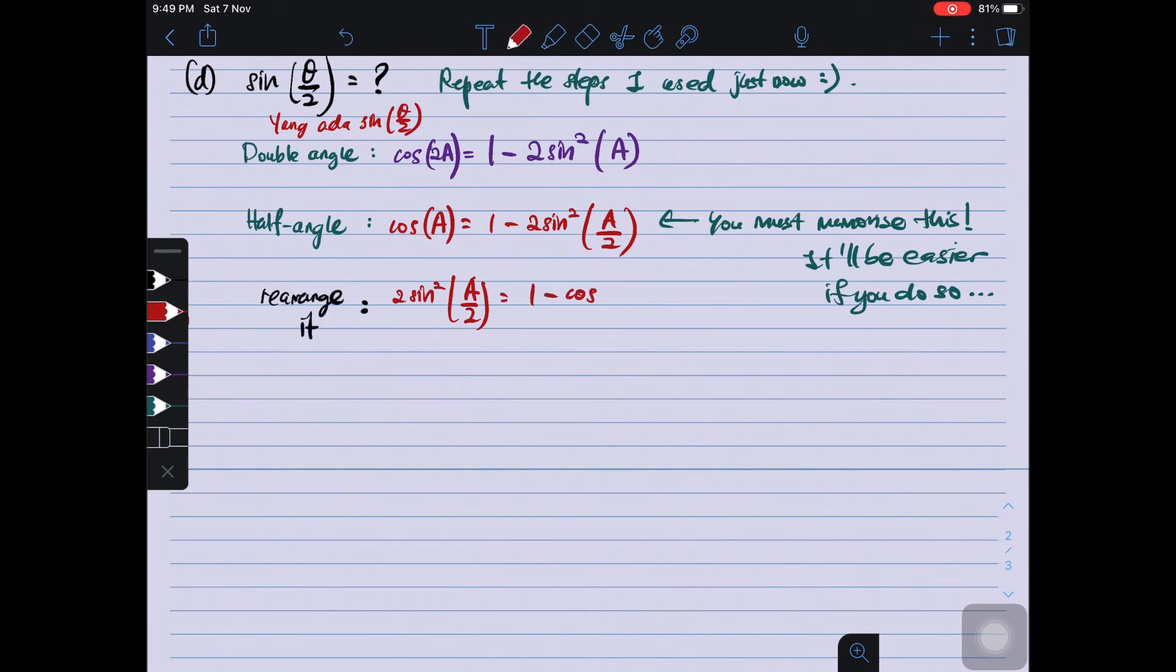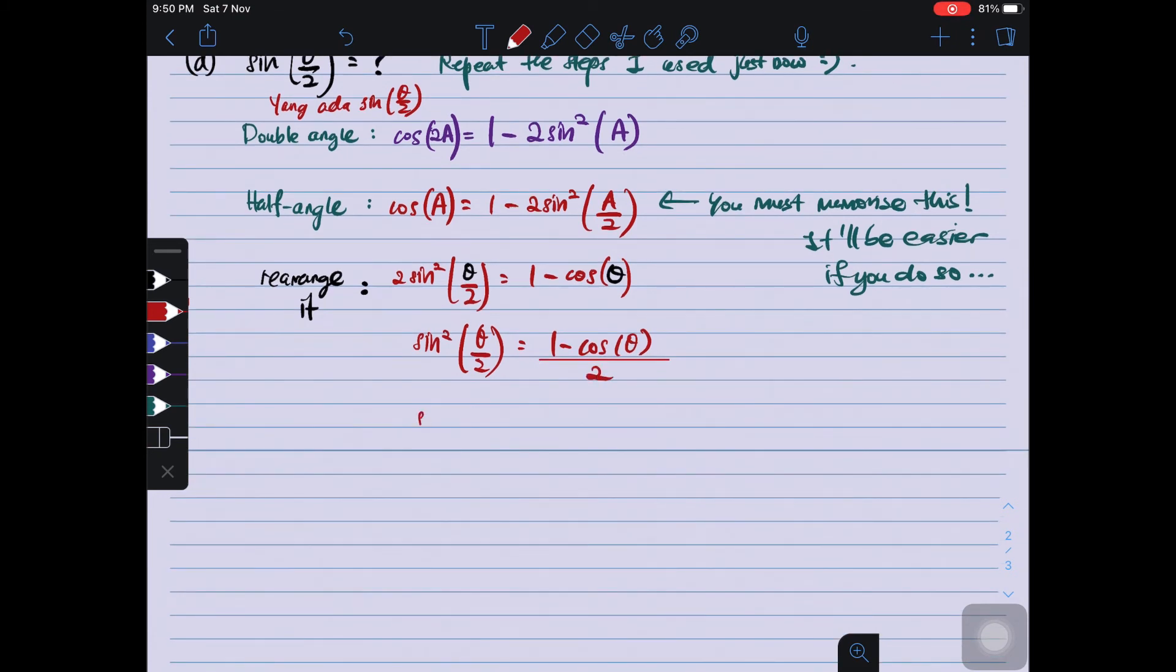So what we need to do is just... Jadikan 2 sin² A/2 as subject. Rearrange it. And you're going to get 1 minus cos A. Theta. Oh sorry. Yeah, I must use theta. Sebab soalan is theta. Jadi, I divide both side by 2. Divide both side with 2. And then, I jadikan sine as subject. Dapat square root. Plus and minus. I've got 2 answers.